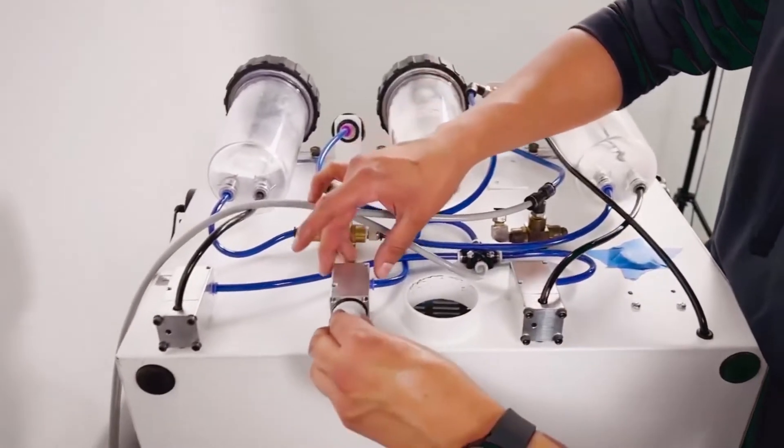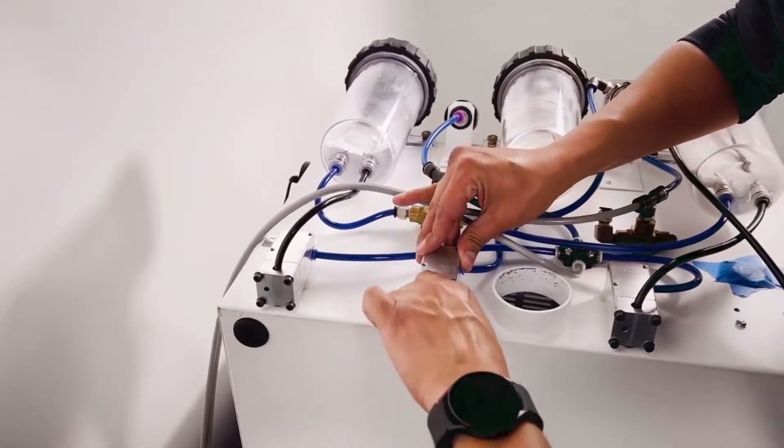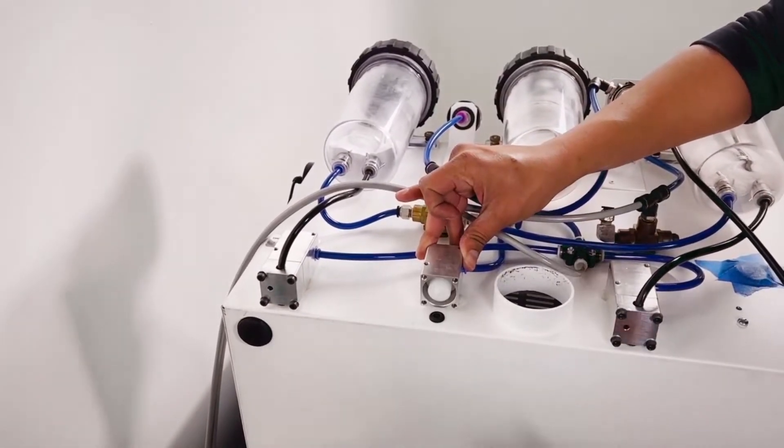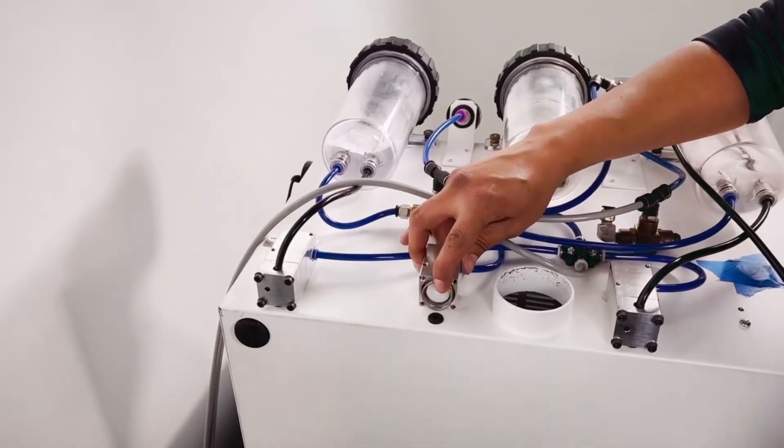Step 4. Reassemble the pinch valve. Lubricate and replace the valve in the casing, followed by the spring, and tighten the bolts.